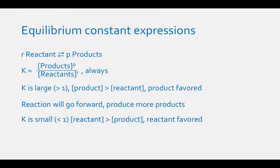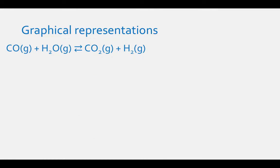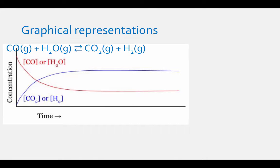If the equilibrium constant is small — less than 1 — then the concentration of reactants is greater than the concentration of products, and we say that the reaction is reactants favored. This means the reaction will tend to go in the reverse direction and create fewer products. For example, for the reaction CO gas plus H₂O gas in equilibrium with CO₂ gas plus H₂ gas, the concentration versus time graph looks like this.